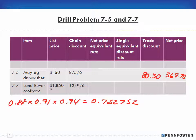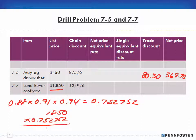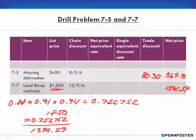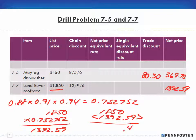I take the list price of $1,850 and multiply it by 0.752752, giving me a net price of $1,392.59. Taking $1,850 minus $1,392.59 gives me a discount amount of $457.41.